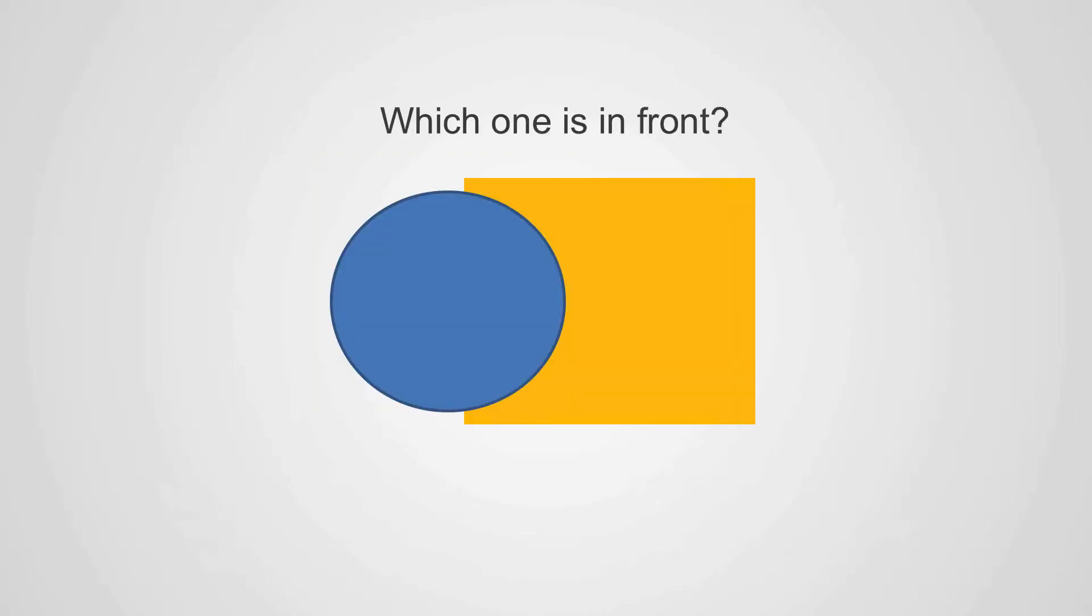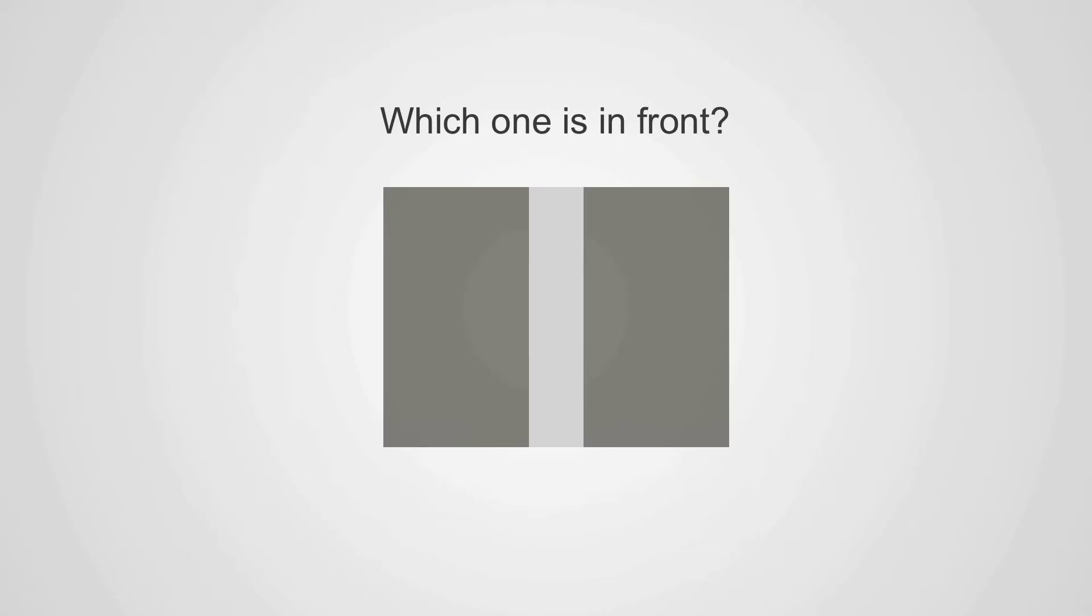In the non-X-ray world, when two objects overlap, we can tell which one lies in front of the other. This is called interposition. In the X-ray world, this is more difficult. Which one of the two rectangles is in front? We cannot tell.